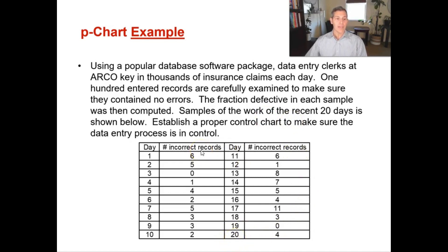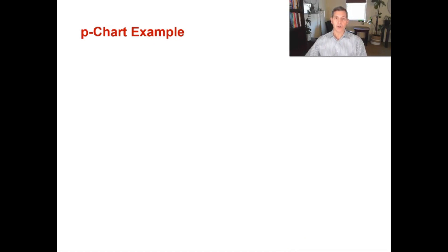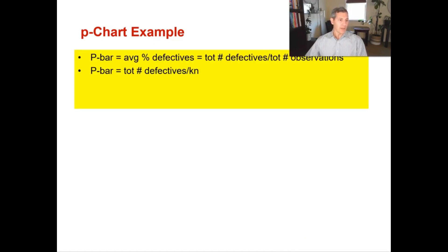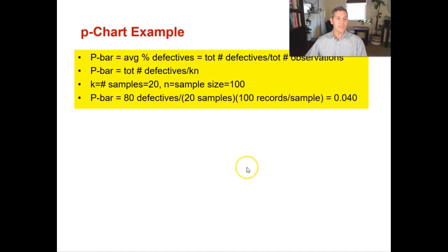You'll need to add up all the incorrect records — 6 plus 5 plus 0 plus 1, and so on. The sum of all incorrect records is 80. Now we have all the information to start creating our P chart. To calculate P-bar: K equals 20 (number of samples), N equals 100 (sample size). So P-bar equals 80 total defectives divided by 20 samples multiplied by 100 records, which gives you a P-bar of 0.04.